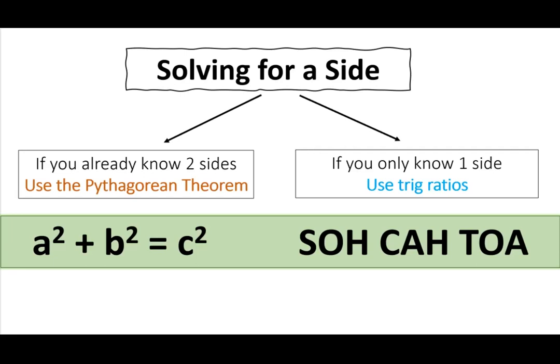Let's learn how to find side lengths of a right triangle. There are two scenarios. The first one is when you already know two sides — then you use a squared plus b squared equals c squared. I've already shown you how to use this formula to find the side lengths. If you want to refresh your memory, I've added the link at the top of my screen. Today I will show you scenario number two, which is when you only know one side length of a right triangle — this is when you use SOH CAH TOA: sine, cosine, and tangent.